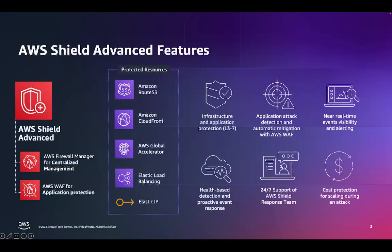AWS Shield Advanced works together with AWS WAF to detect and mitigate DDoS attacks at the application layer. With AWS Shield, you can protect the following resources: AWS CloudFront Distribution, Amazon Route 53 Hosted Zone, AWS Global Accelerator, Classic Load Balancers, Application Load Balancers, and Elastic IP. Shield Advanced provides enhanced Layer 3 and Layer 4 protection, and can be configured to respond automatically to mitigate application layer attacks against your protected resources.